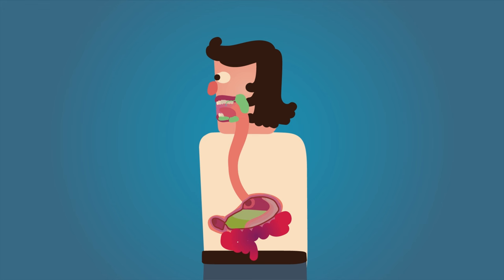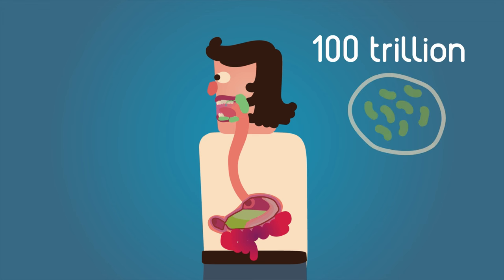Probably the most amazing thing about digestion, however, is that a lot of it isn't actually done by our cells, but by 100 trillion bacteria living inside our guts. They help break down certain foods for us, make vitamins, and help with the immune system.